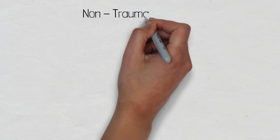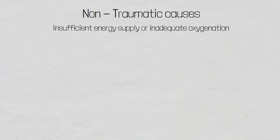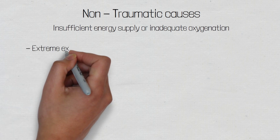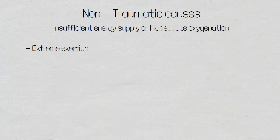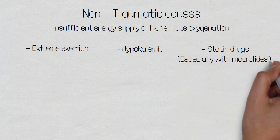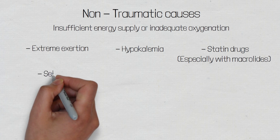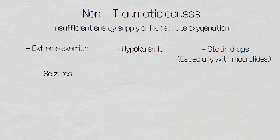Non-traumatic causes are those that cause an insufficient energy supply or an inadequate oxygenation of the cell. These include extreme exertion, where energy is rapidly used quicker than it can be supplied. Hypokalemia, as potassium plays an important role in blood supply to muscle cells. Statins, which are direct myotoxins. The effect of statins is worsened when combined with a macrolide, such as erythromycin, as they decrease the clearance of statins. Seizures, which will cause prolonged muscular activity, depleting energy levels more rapidly than they can be supplied.